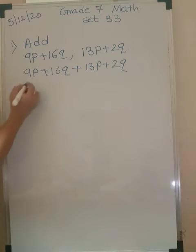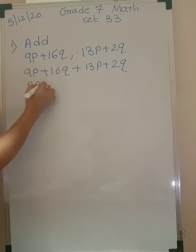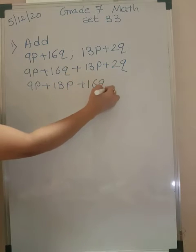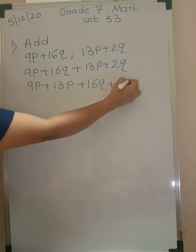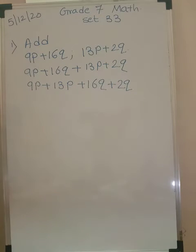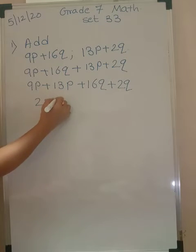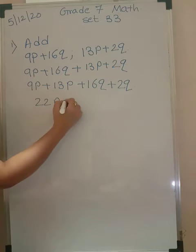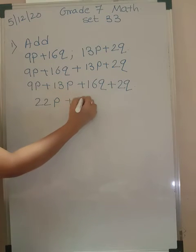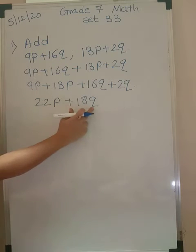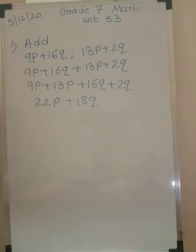Now let us write like terms together. So you have 9p plus 13p, plus 16q plus 2q. Now 13 plus 9 is 22, so you have 22p. Plus 16 plus 2 is 18q. These two cannot be added because this is p and this is q. So your answer is 22p plus 18q.